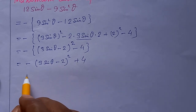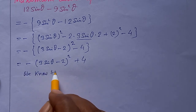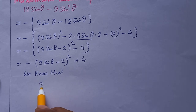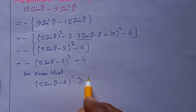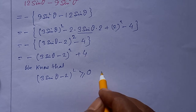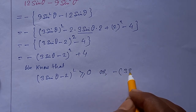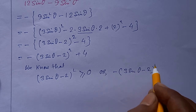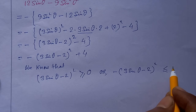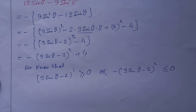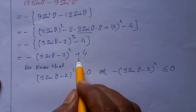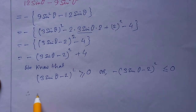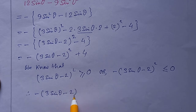We know that (3sinθ - 2)² is greater than or equal to 0, so minus (3sinθ - 2)² is less than or equal to 0. Therefore, minus (3sinθ - 2)² plus 4 is less than or equal to 4.